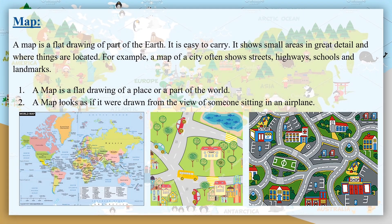If I talk about map, a map is a flat drawing of part of earth. It is easy to carry. It shows small areas in great details and where things are located.